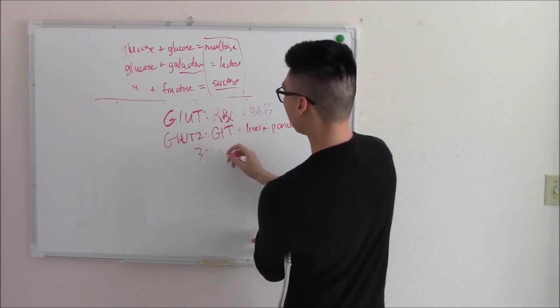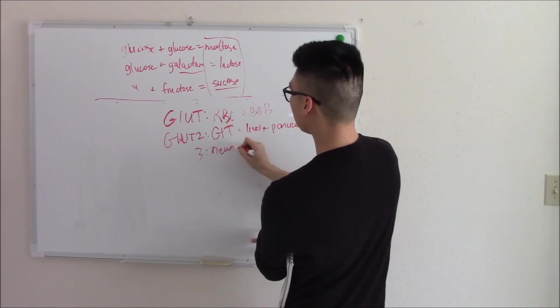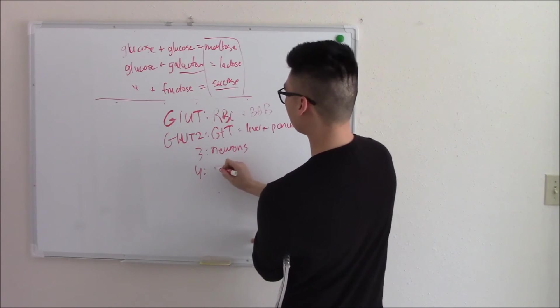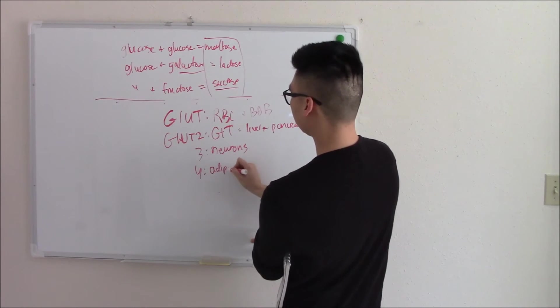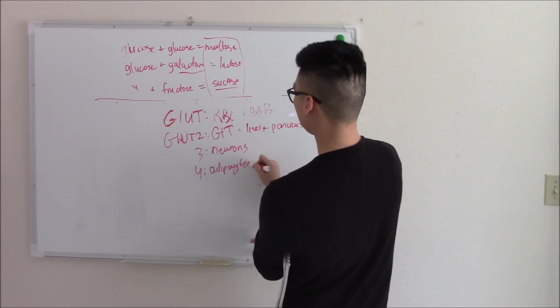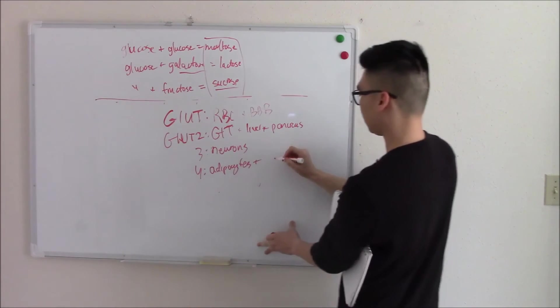GLUT 3. This is going to be your neurons. GLUT 4. It's going to be found in your adipocytes, so your fat, and your muscles.